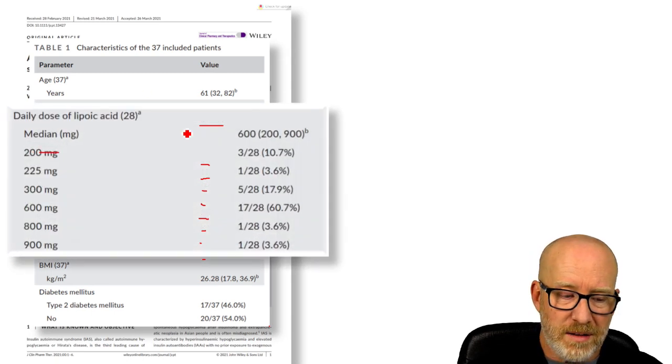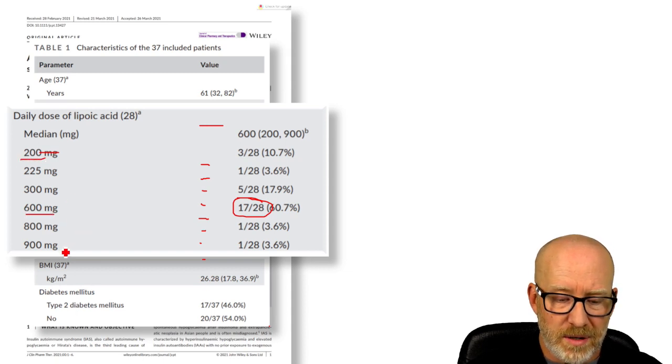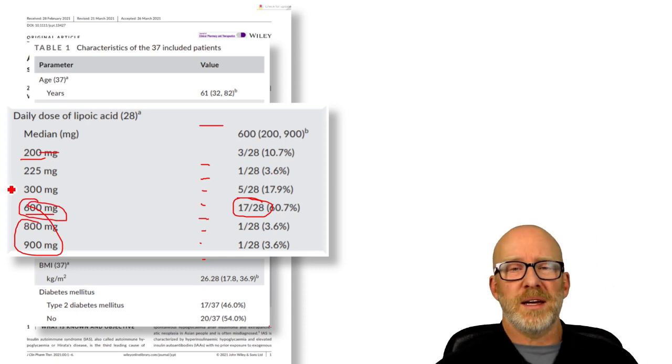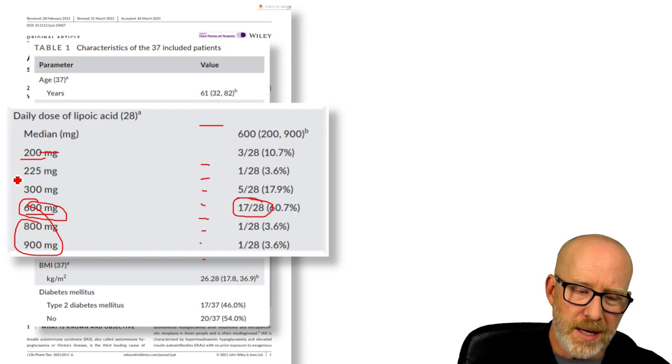They also found that the average dose was about 600 milligrams in most of these case reports. Some were taking less, a couple people were taking more, but this was sort of that sweet spot. Most of these people in these case reports were taking it for diabetic neuropathies. Pain, right?